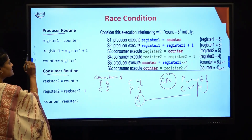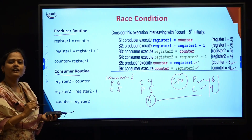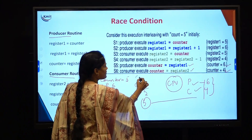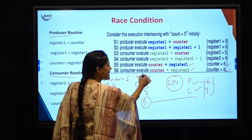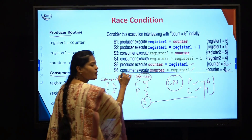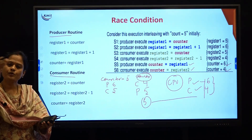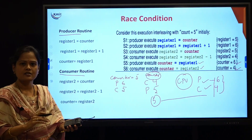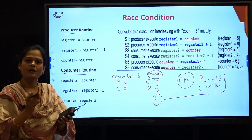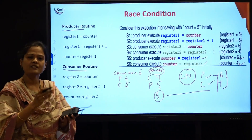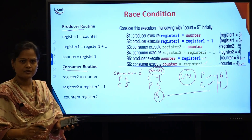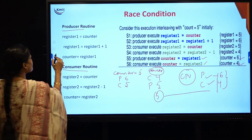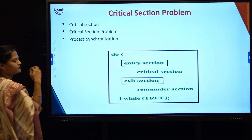Why are we getting a race condition here? Because we are making use of the counter value. The counter is a shared variable. On this counter variable, we are asking the producer to make changes as well as the consumer to make changes. But a shared variable cannot be changed at the same time by two different processes. So what is the solution to overcome this race condition?